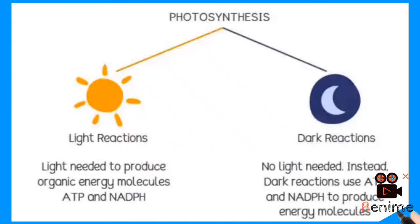There are two stages of photosynthesis. The light reaction stage occurs in the presence of light — it is light-dependent. The dark stage is light-independent.